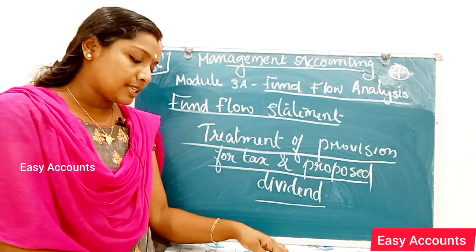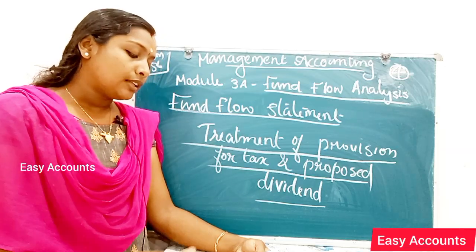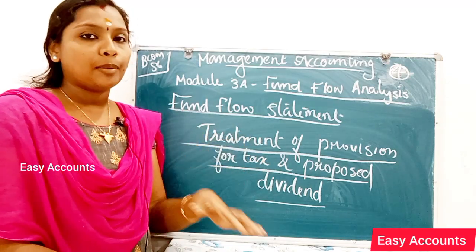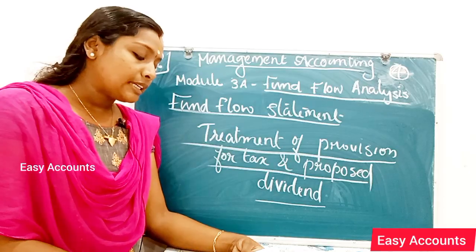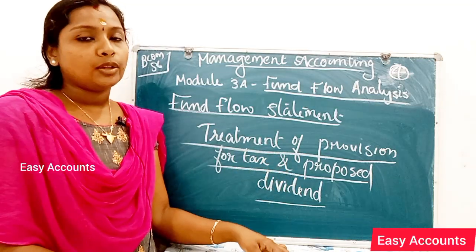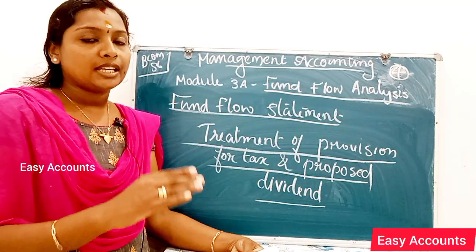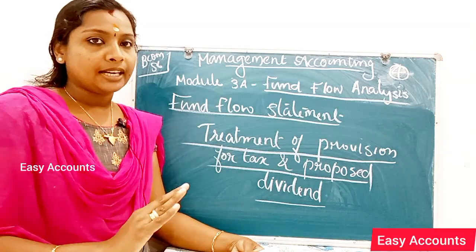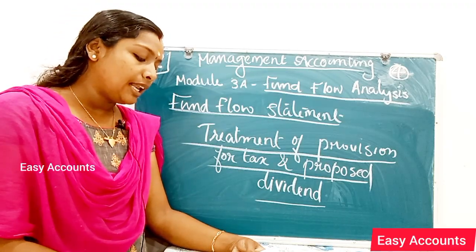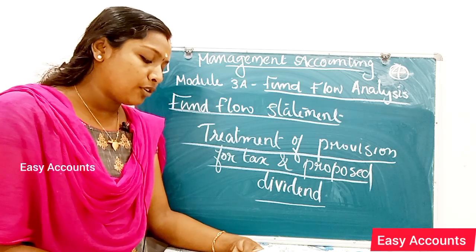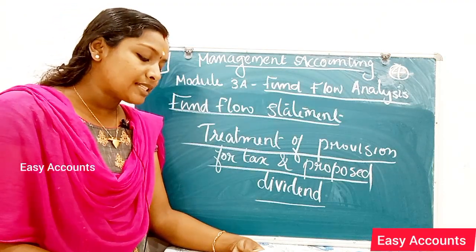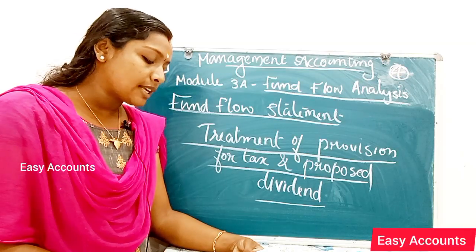The case here involves the Provision for Tax. This item is considered as a current liability and is included in the Schedule of Changes in Working Capital. Therefore, the Provision for Tax is not prepared in the worksheet to ascertain the payment of tax made during the year, and that payment will not be shown as an application in the Fund Flow Statement.